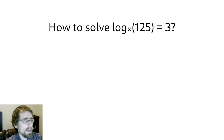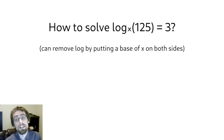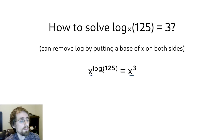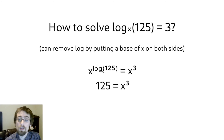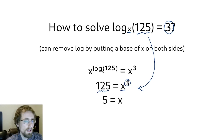Let's say I have log base x of 125 equals 3, and I want to solve for x. I don't quite know how to think about log base x, so I'll try to get rid of it. A base of x cancels a log base x, so I add a base of x on both sides. On the left, x to the log base x cancels, leaving 125 equals x cubed. Then taking the cubic root on both sides gives x equals 5. Again, you could have done this in one step using the conversion rule.